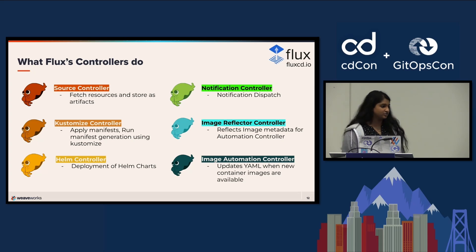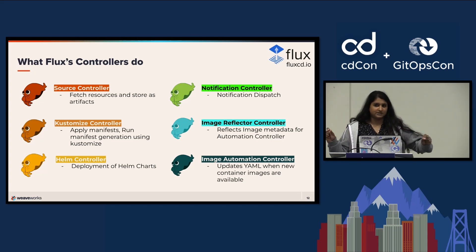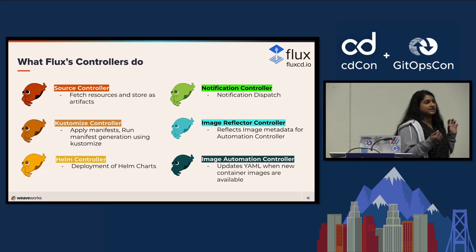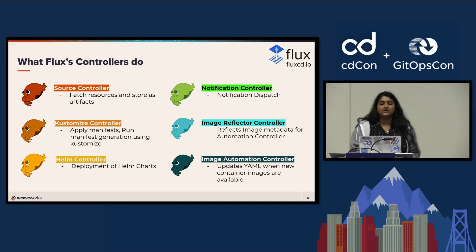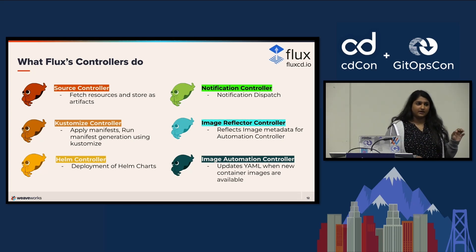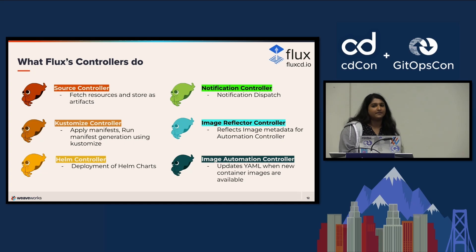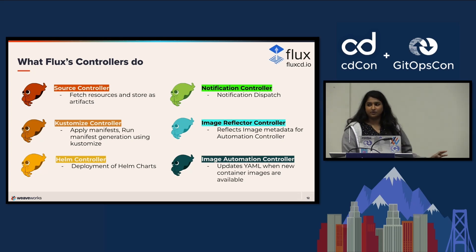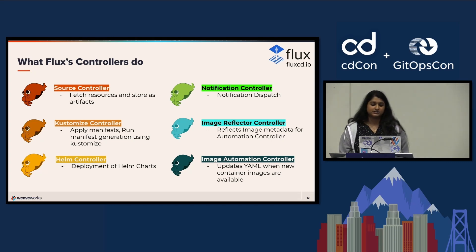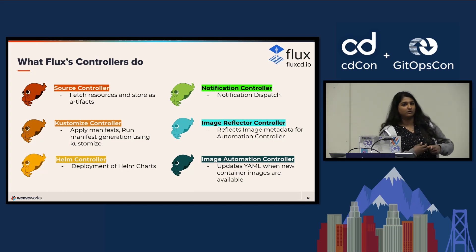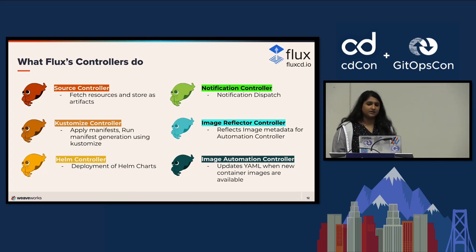If a kustomization.yaml isn't there, the controller will recursively find all the YAMLs and create its own kustomization in memory and apply those manifests. The Helm controller manages deployment of Helm charts using the true Helm API, so you can still use the Helm CLI to interact with Helm charts afterwards. And then the notification controller handles inbound and outbound events — it can notify you in Slack if a change has been made or if drift is detected, and it can also listen for a webhook from GitHub to trigger action on a change.